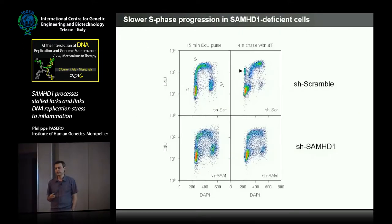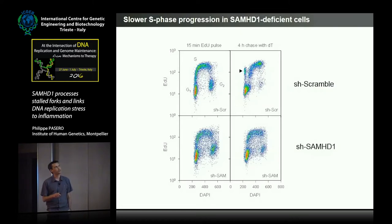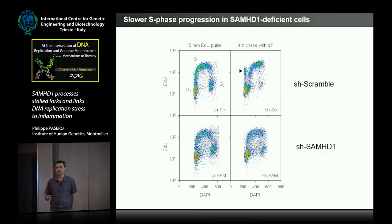We depleted the protein and measured S-phase progression by doing a pulse of EDU and a chase. What we found is that in control cells there is a rapid progression through S-phase, and after four hours we can see that S-phase cells go back to G1. But in the absence of SAMHD1, that is not the case, indicating that the cells are progressing more slowly through S-phase.